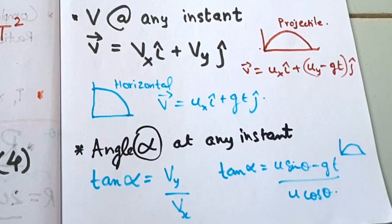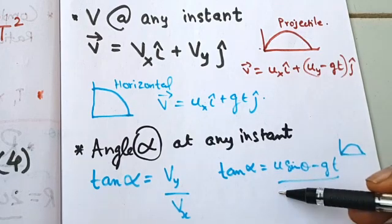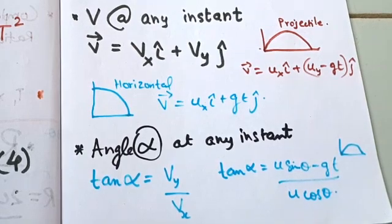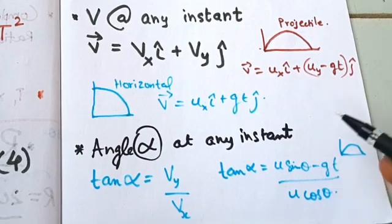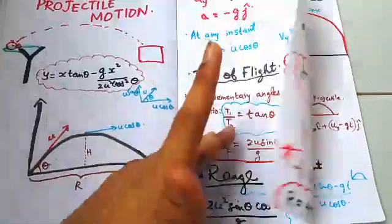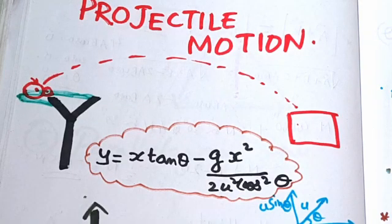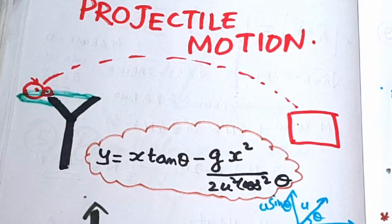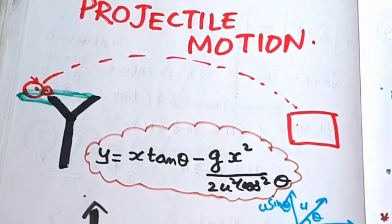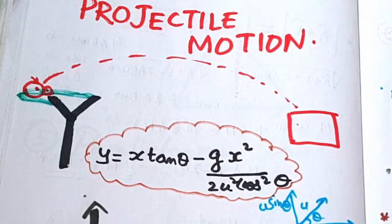So tan alpha is equal to (u sin theta minus gt) by (u cos theta). The angle at any instant alpha equals tan inverse of that expression. The trajectory equation — the path of the projectile — is y equals x tan theta minus g x squared by (2 u squared cos squared theta).